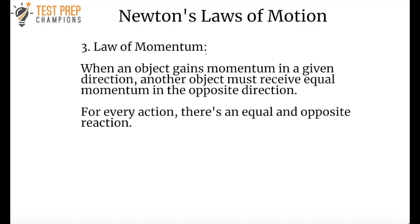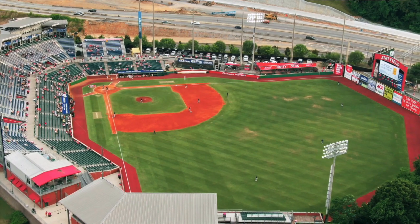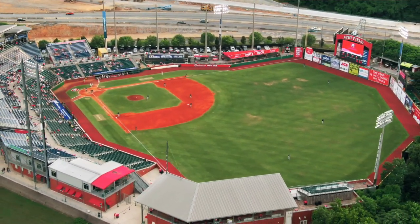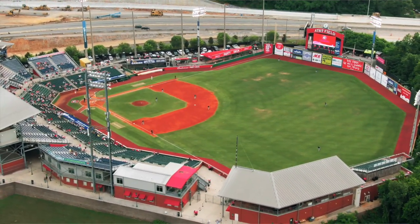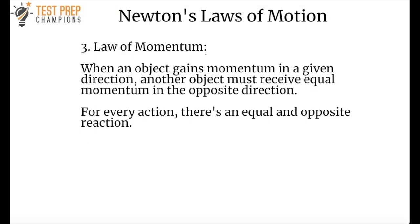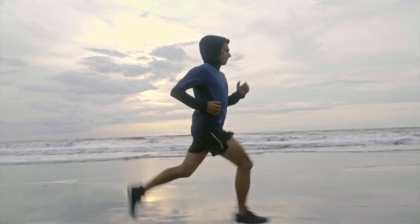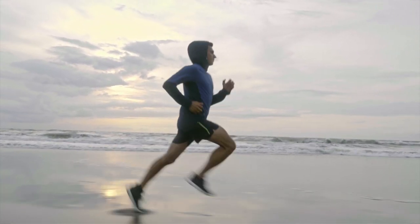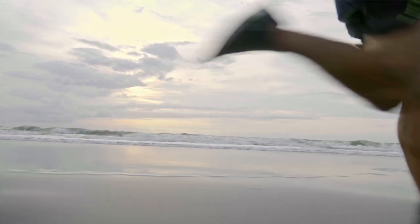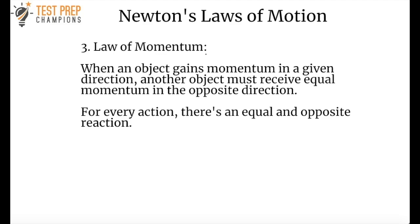Newton's third law is the law of momentum. It states that when an object gains momentum in a given direction, another object must receive equal momentum in the opposite direction — in other words, for every action there's an equal and opposite reaction. For example, a baseball player swings their bat and strikes the ball, and the ball goes in the opposite direction. Also, when runners jog, they're exerting a force on the ground, and there's an equal and opposite reaction — which is why running can cause pain in the feet or joints.